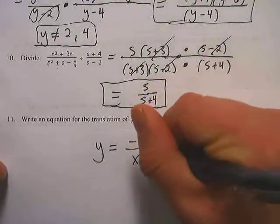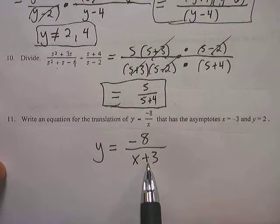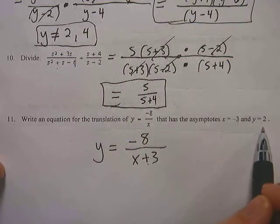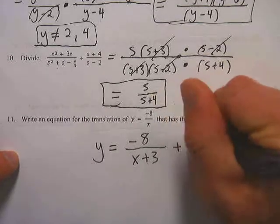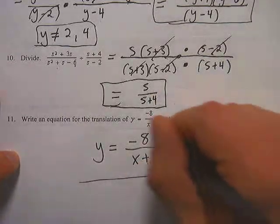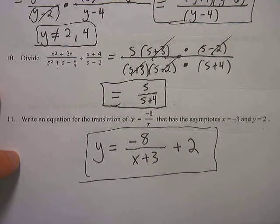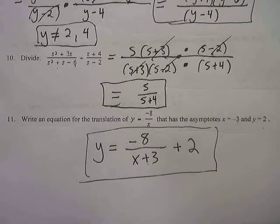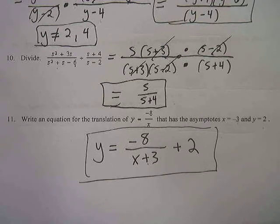Number 11: write an equation for the translation of y equals negative 8 over x that has asymptotes at x equals negative 3 and y equals 2. I keep the negative 8 on top. Since the vertical asymptote is x equals negative 3, the denominator becomes x plus 3, which shifts it left 3. The horizontal asymptote y equals 2 means I add plus 2 on the outside. That's going to do it for this first video — we got through the first two pages of the Unit 8 Test Review, and we'll pick up on the third page in video number 2.